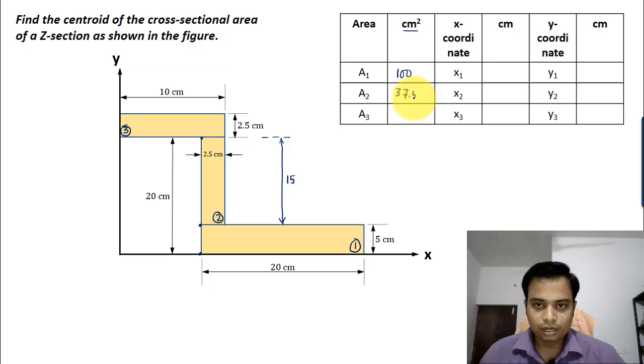And finally we have this 10 multiplied by 2.5. Well, this is obviously going to work out as 25. So we are done with area calculation.